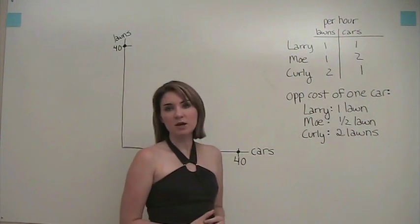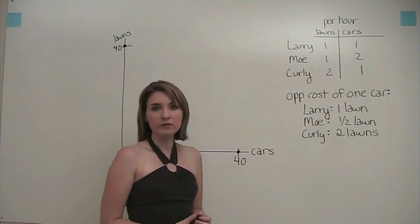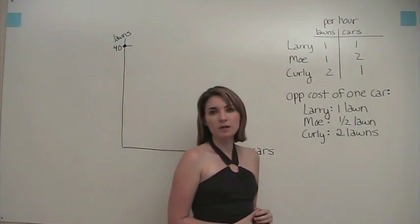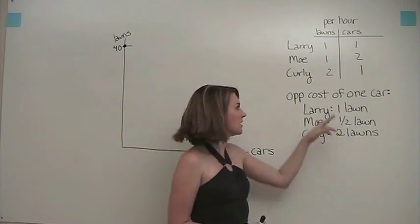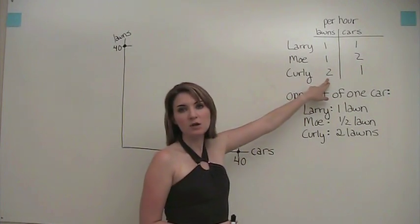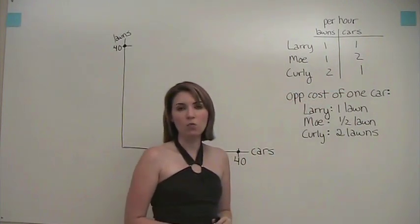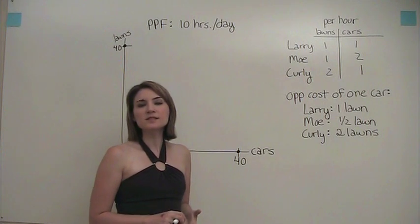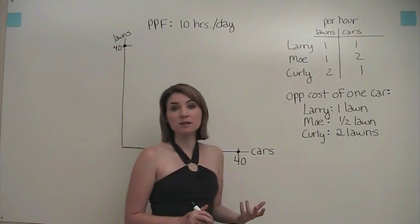Curly's opportunity cost of washing a car is two lawns, because in one hour he would have to give up mowing two lawns in order to wash one car. Now let's use this information to construct the production possibilities frontier.